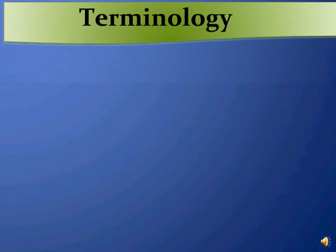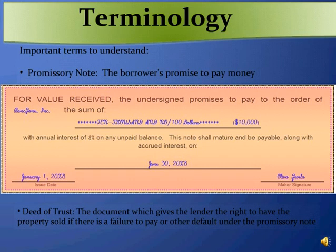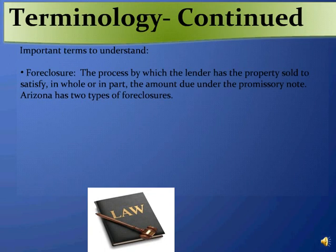Some of the basic terminology. A promissory note is simply the borrower's promise to pay a certain sum of money according to certain terms. A deed of trust is the document that gives the lender the right to have the collateral or the property sold if the borrower fails to pay under the promissory note. Foreclosure is the process by which the lender has the collateral property sold to satisfy in whole or in part the amount due under the promissory note after a default.